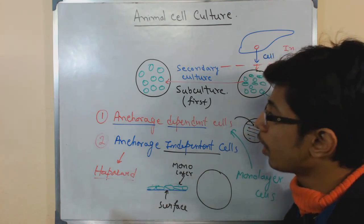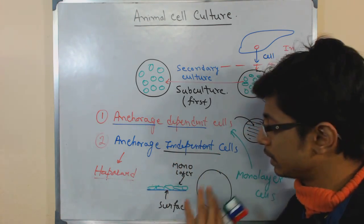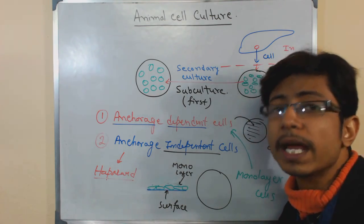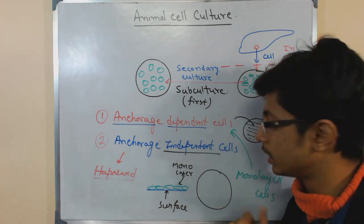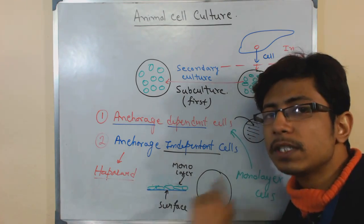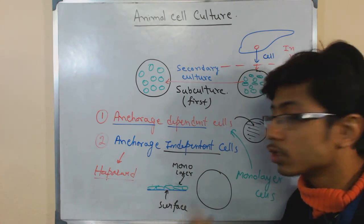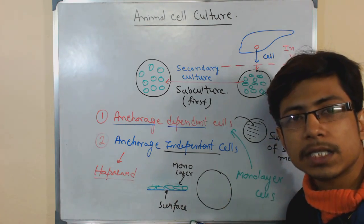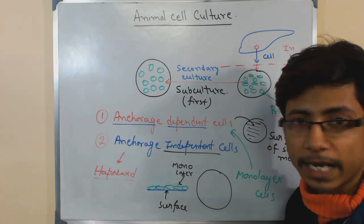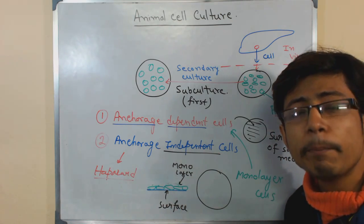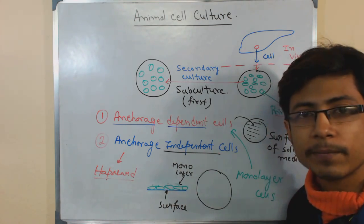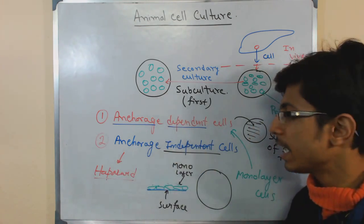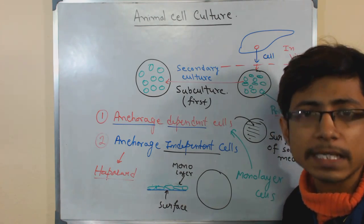No other thing is required for anchorage independent cells. But for the growth of anchorage dependent cells, we need to be very careful about designing the media so that it can completely cover the media surface, take those media nutrients and grow. The growth will be stopped and halted once they reach the formation of a single layer of cells onto the surface. In the growth of anchorage dependent cells, we will get a small number of cells onto the surface of the media. On the other hand, in the case of anchorage independent cells, we can get many more cells in the liquid media and they are easy to harvest.